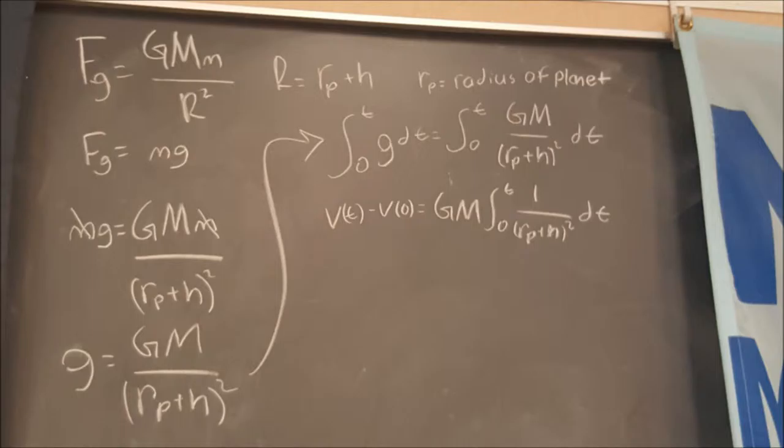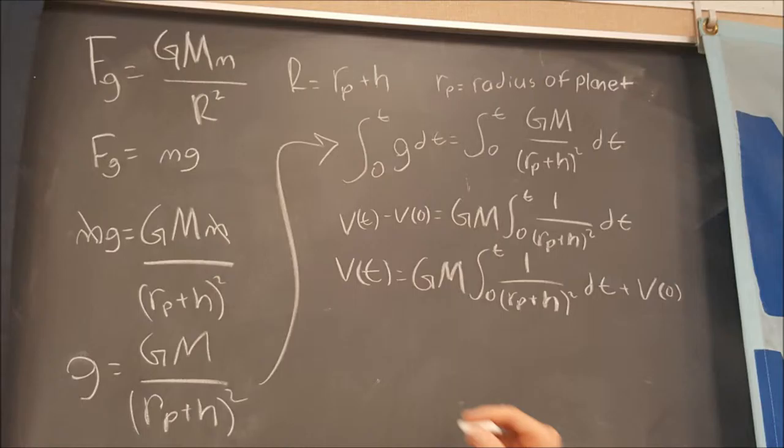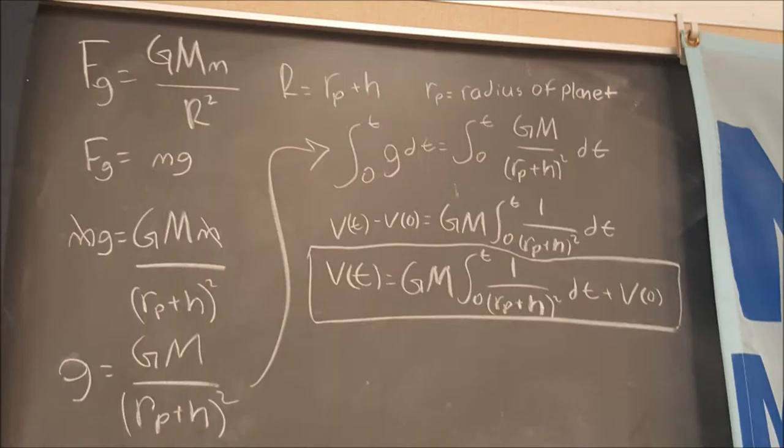Now since g is an acceleration, we can take the integral of that and get velocity. So we made it a definite integral from zero to T and we got this equation here. You guys can kind of just look at it.